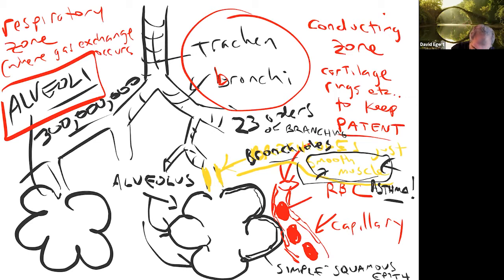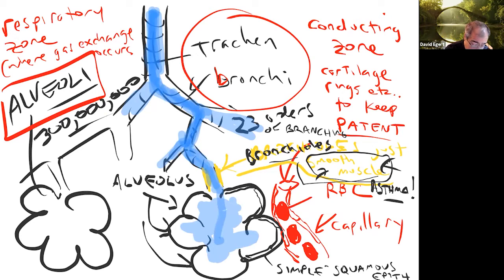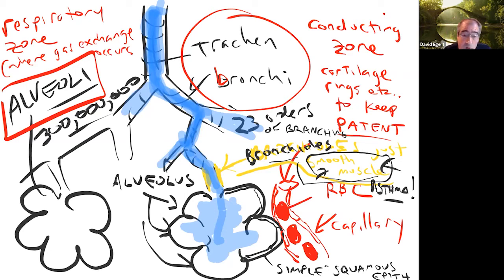There's also a lot of dead space in the conducting zone. There's about 150 milliliters of air that stays stuck in the conducting zone and never makes it down into the alveoli. When you exhale, you expel some stale air, but you don't clear it all — a lot stays in this one-way blind-sac system. So the levels of CO2 that build up in your respiratory system are much higher than they are in the atmosphere.